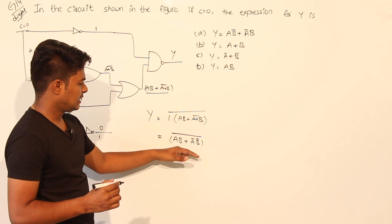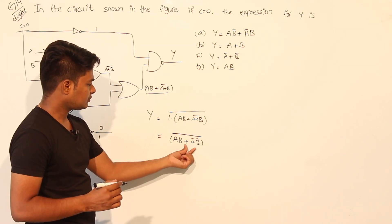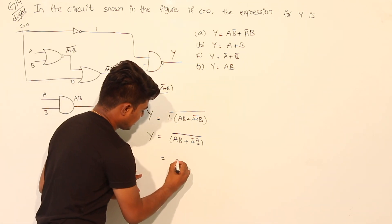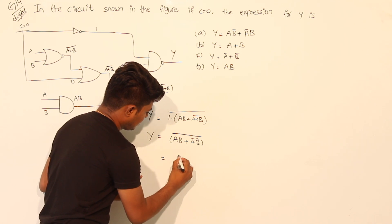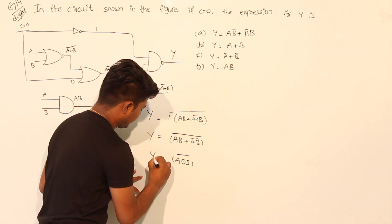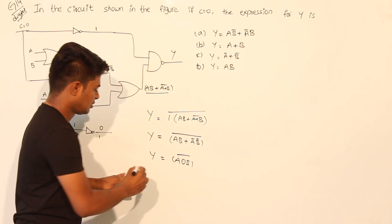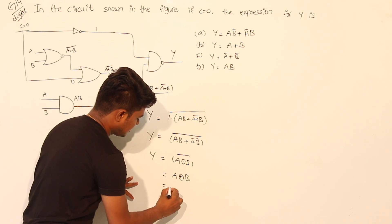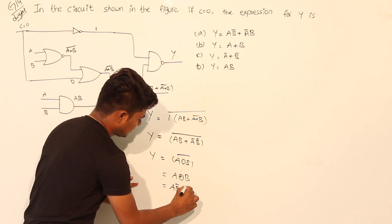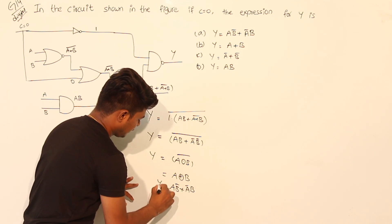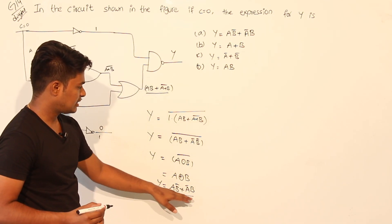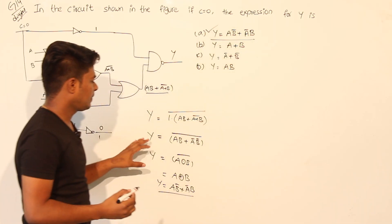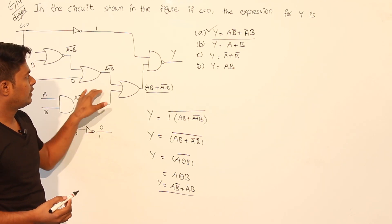If we observe this clearly, AB + A bar dot B bar is the XNOR expression, which means A XNOR B whole bar. Since XNOR is the complement of XOR, this implies A XOR B, which expands to AB bar + A bar B. So the equation for Y is AB bar + A bar B, and option A is correct.